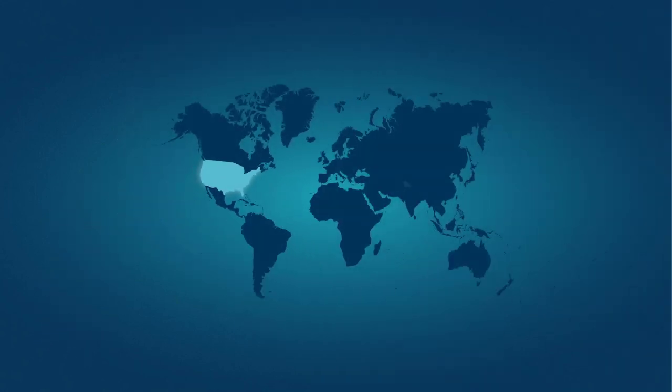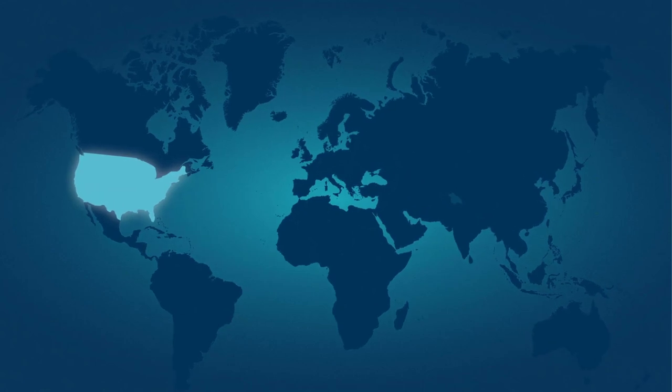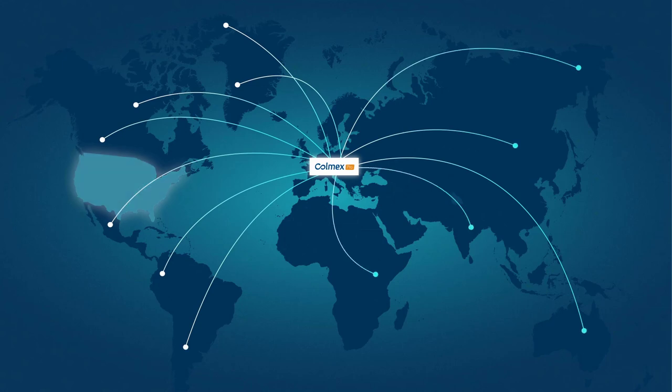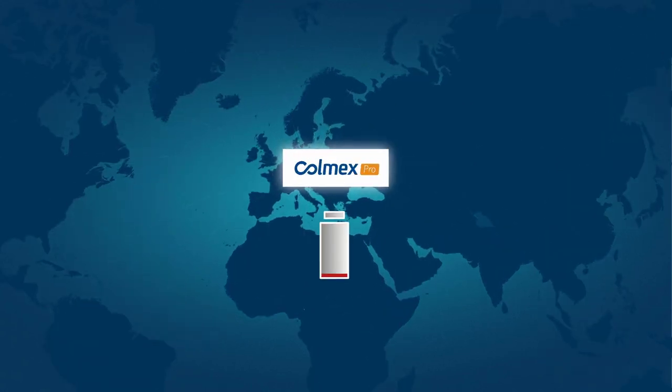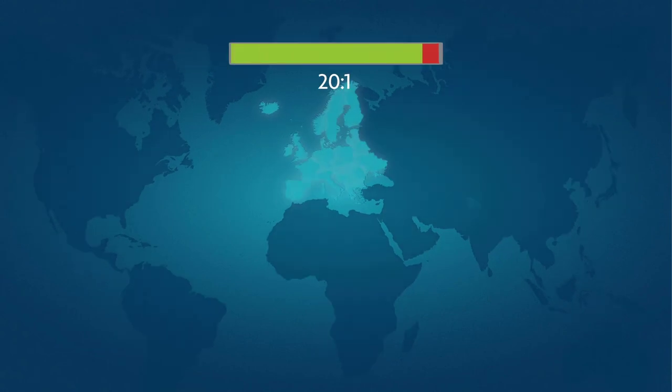The pattern day trading rule does not apply to residents of other countries. Therefore, if you are not a US resident, you can open an account with a non-US broker such as Colmex Pro, a European regulated broker, and start with an initial deposit as low as $1,000. An EU broker will provide you with up to 20 to 1 margin.